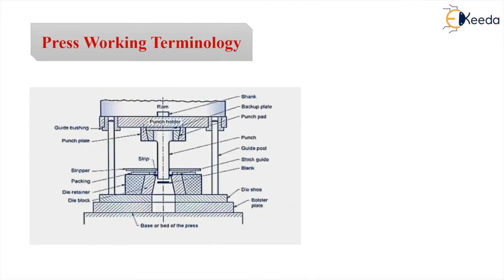Let us now see the press working terminology. This is a simple picture of a press, with two important parts: the punch and the die. All other things are the assemblies of the punch and die. The various elements include the bed or base plate, bolster plate, die, shoe, strip, strippers, punch plate, and punch pads. We will go through these one by one.